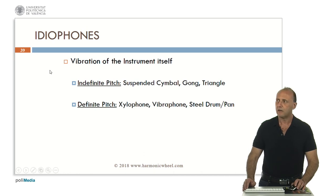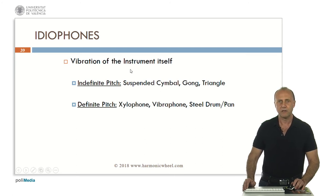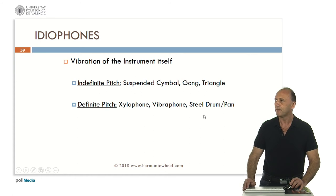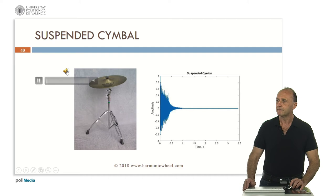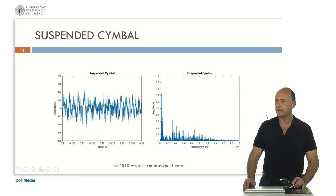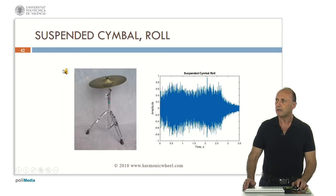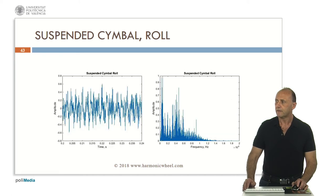Now let's analyze the timbres of idiophones. In this case, the sound is generated by the vibration of the body of the instrument itself. They can have an indefinite pitch, as the suspended cymbal, gong, and triangle, or a definite pitch, as the xylophone, vibraphone, and steel drum or steel pan. This is the suspended cymbal. The sound is very short and the spectrum is not a harmonic series, because this is noise. A roll on a suspended cymbal — again, the spectrum is not a harmonic series, because this is noise.